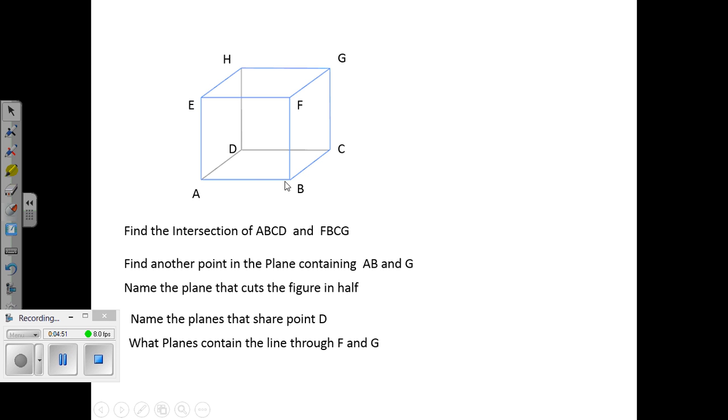So, A, B, and G. Line A, B, and G. That would be the plane that is kind of diagonal. A, B kind of slices through here. Another point that would be in that plane would be H.